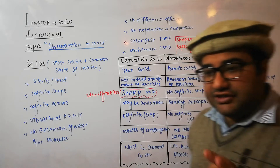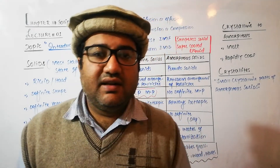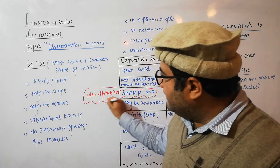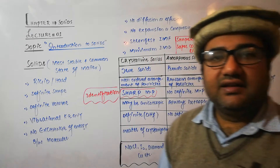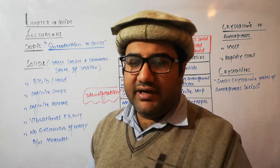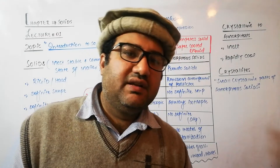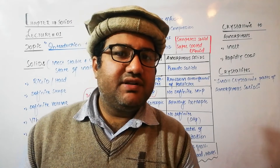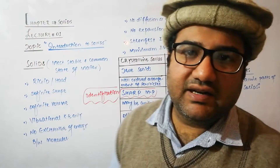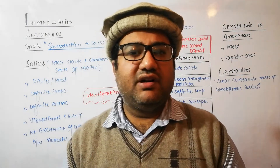Crystalline solids have a definite sharp melting point — for example, NaCl has a melting point of 801 degrees. This sharp melting point is used in their identification, so crystalline solids can be identified by their melting points. Amorphous solids do not have a definite melting point. When you melt glass, it starts melting at a particular temperature and continues melting slowly, ending at another temperature. That range between the starting and ending point is called the melting point range.